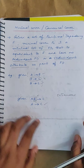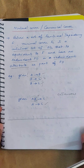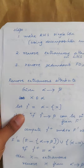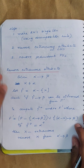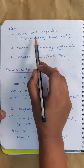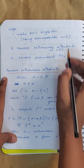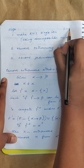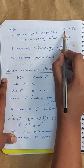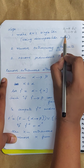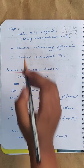Now let us see what the steps are to find the minimal cover given a set of FDs. There are three basic steps. The first step is: given the set of functional dependencies, make the right-hand side (RHS) singleton — that is, use the decomposition rule. For example, if you have A→BC, split it as A→B and A→C. That is the first step.